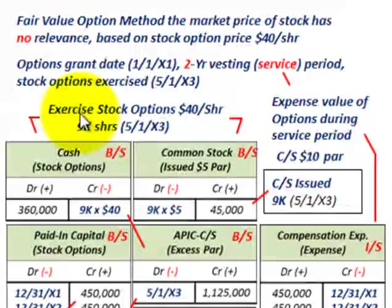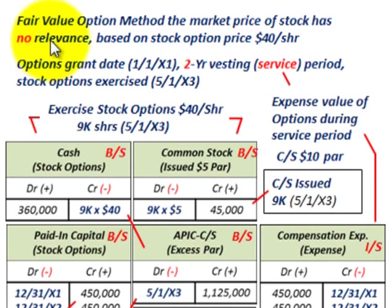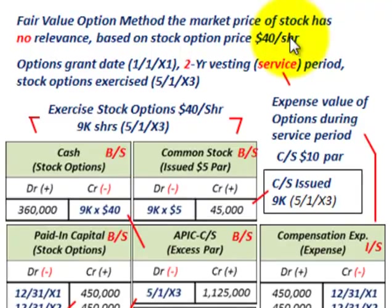Let's look at how we record this. We're going to be using the fair value option method, where the market price of the stock really has no relevance when it comes to making our accounting entries. The market price matters to the employee buying the options, but our accounting is going to be based on the stock option price that the company set at $40 per share.